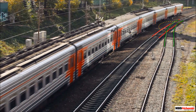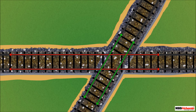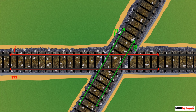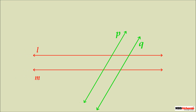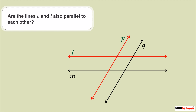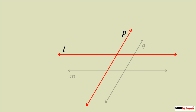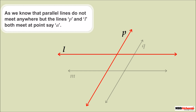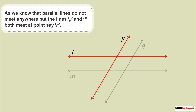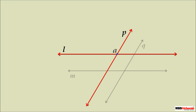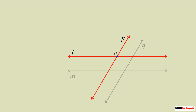If we go further on the same track, we see that the track meets another track. Let's take these rails as lines l, m, p, and q. As lines l and m do not meet anywhere when extended infinitely in both directions, we can say they are parallel to each other. Lines p and q are also parallel to each other. However, lines p and l both meet at a point, say A, so they are not parallel — they are intersecting lines.